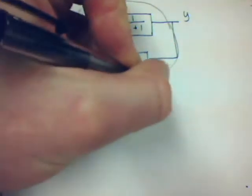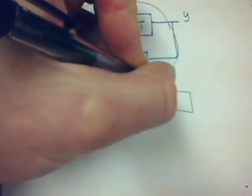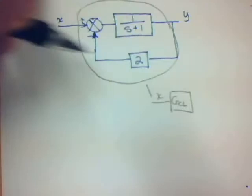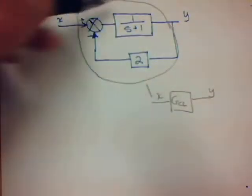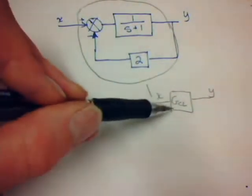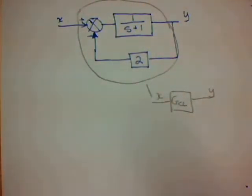We're simplifying this to be just an input and then a transfer function, which I'm going to call GCL for G of closed loop, and then the output. So all of this will be simplified into a single block. That's the whole goal of the closed loop feedback equation.